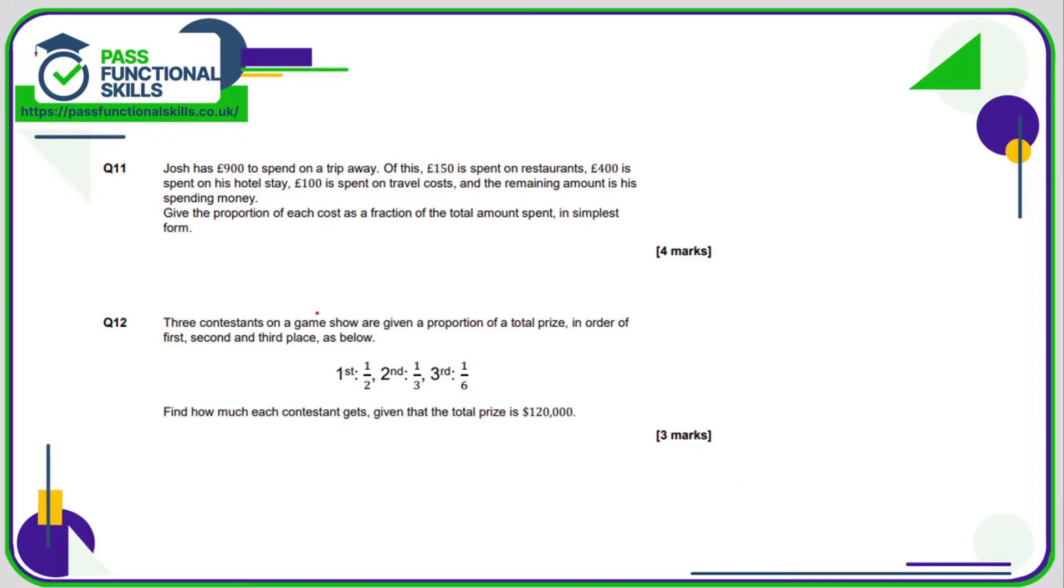Question number 11: we're allowed to use a calculator here. Josh has 900 pounds to spend. He spends 150 on restaurants, 400 is spent on hotels, and 100 on travel costs, and the remaining is spending money. Give the proportion of each cost as a fraction of the total amount spent.